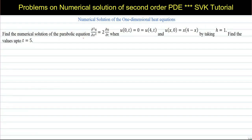Find the numerical solution of the parabolic equation: ∂²u/∂x² = 2·∂u/∂t, where u(0,t) = 0 = u(4,t) and u(x,0) = x(4−x), by taking h = 1. Find the values up to t = 5.